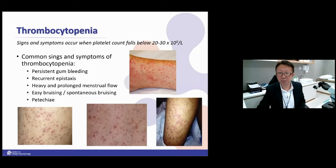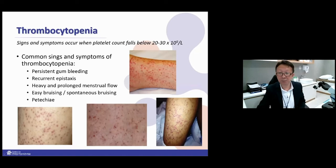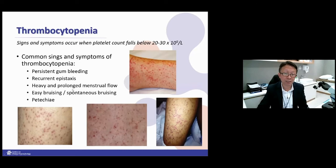The signs and symptoms are petechiae on the skin — common when you have dengue, where platelets can drop down to 1,000–2,000, and you develop petechiae on your hands, face, and abdomen. Other symptoms include gum bleeding, recurrent nosebleed, prolonged menstrual flow, easy bruising, and petechiae.